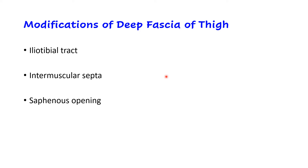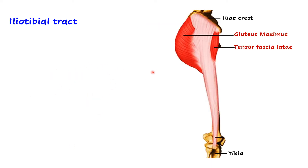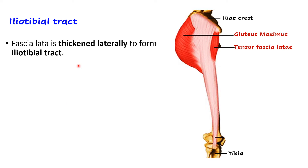The three modifications of deep fascia of thigh are: the iliotibial tract, the intermuscular septa, and the saphenous opening. Let us first see the iliotibial tract, also called the iliotibial band. It is nothing but the fascia lata thickened laterally, forming a tract or band visible along the lateral aspect of the thigh and gluteal region.